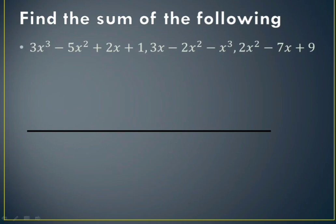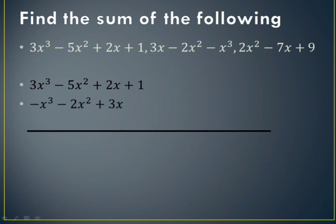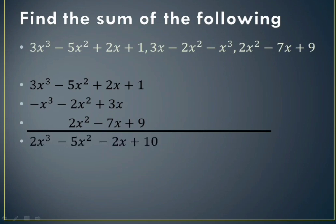Next we have another question and need to find their sum. Writing the first expression, then placing like terms below: 3x below the x terms, minus 2x squared below minus 5x squared, and minus x cubed below 3x cubed. Adding: 3x cubed minus x cubed is 2x cubed. Then minus 5x squared and plus 2x squared: minus 2x squared and plus 2x squared cancel, leaving minus 5x squared. Then plus 2x plus 3x is plus 5x. And 5 minus 7 is minus 2x — wait — and plus 1 plus 9 is plus 2. So the answer is 2x cubed minus 5x squared plus 5x plus 2.